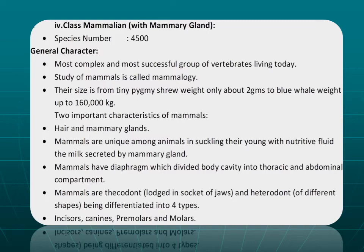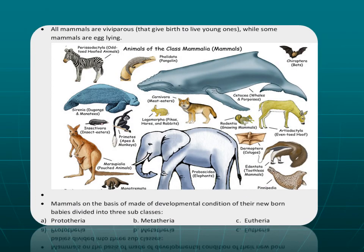Mammals are unique among animals in that they suckle their young ones with a nutritive fluid — milk — secreted by the mammary glands. Most mammals are viviparous, though some mammals are oviparous or egg-laying, known as monotremes or Prototheria. On the basis of developmental condition of the newborn, mammals are divided into three subclasses.